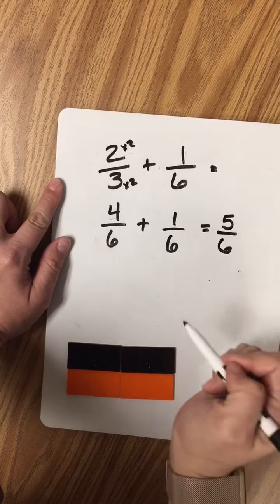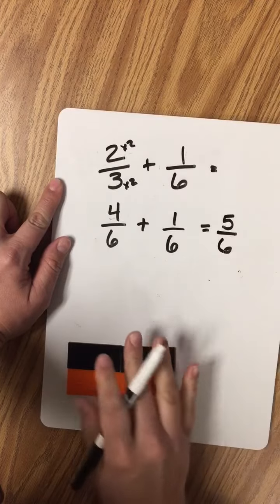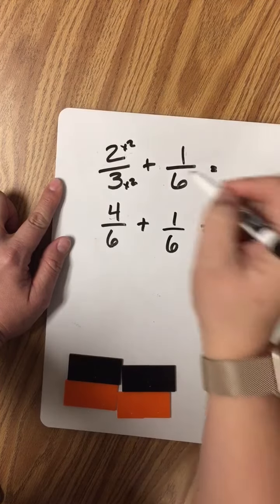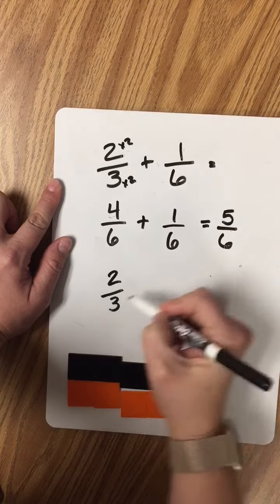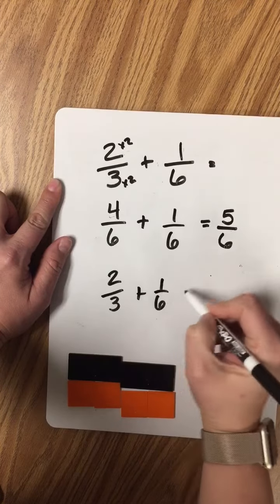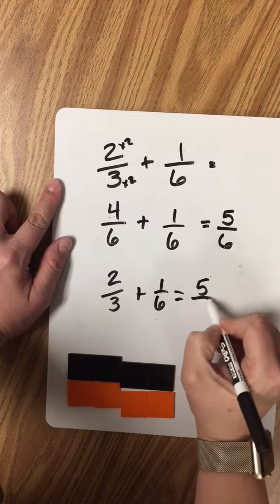So, 4 sixths plus 1 sixth equals 5 sixths. That's great, but my original question didn't ask that. It asked what 2 thirds plus 1 sixth equaled, and it's still 5 sixths.